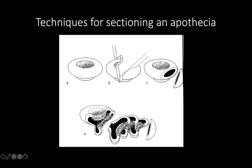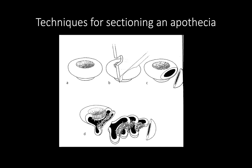There is a video I made that reviews different techniques for sectioning an apothecia. These little slivers are what you put on your slides with a drop of water, and sometimes with KOH, in order to visualize the asci and the spores. Please review that video, and also note that chapter 13 of Lichens of North America covers this in a written way.